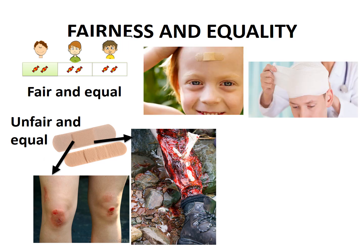Let's take another example. On the left, we have a child who perhaps has fallen over and got a small bump on their head. On the right, we have a boy who suffered quite serious head injuries and has been bandaged up with a very large bandage. In this case, the treatment being given to each child is not equal — one is given a small band-aid, one is given a very large bandage. However, we might say that treatment is fair, because the child with the small bump only needs a single band-aid, while the boy with the more serious injury needs a much larger bandage.